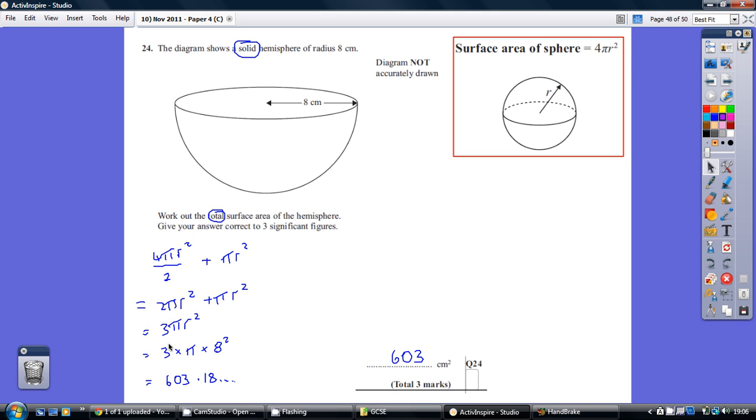So all we've got to do here is 3 times pi times the radius squared, and the radius is 8. So popping this into our calculator, we get this, and this rounds to this, to 3 significant figures.